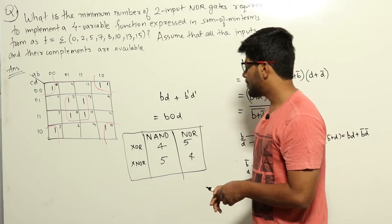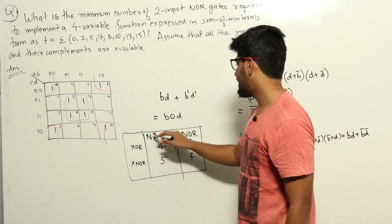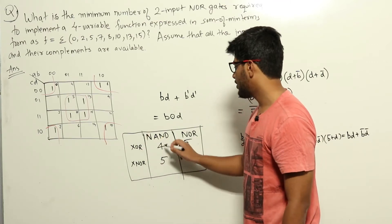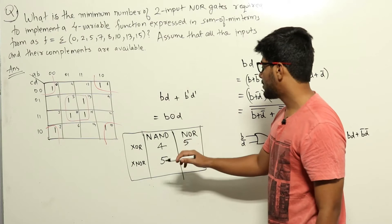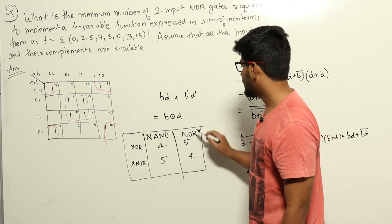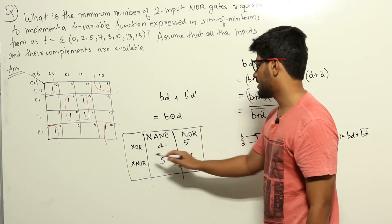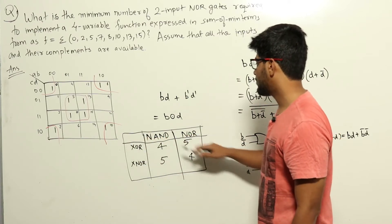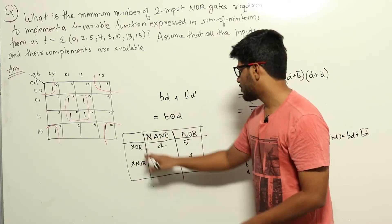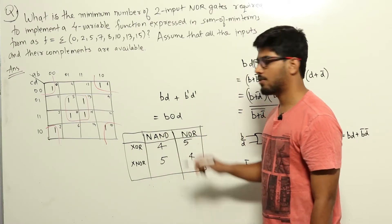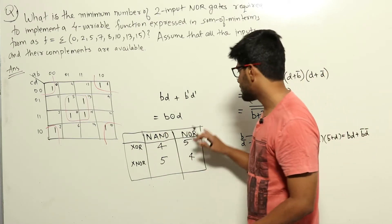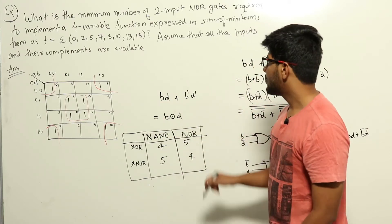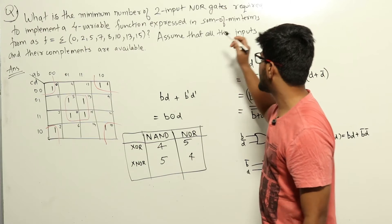This function simplifies to BD + B'D', which is nothing but B XNOR D. When implementing XOR or XNOR using NAND and NOR gates: the minimum number of NAND gates for XOR is 4 and for XNOR is 5; the minimum number of NOR gates for XOR is 5 and for XNOR is 4. These values are obtained when inputs are available only in true form.